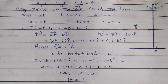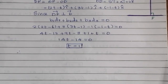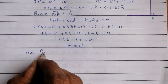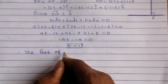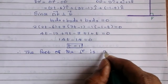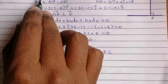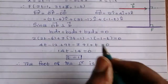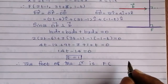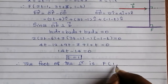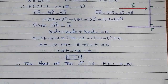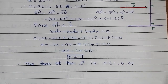Therefore, the foot of the perpendicular is F. Substituting t = 1: x = 2(1)−1 = 1, y = 3(1)+3 = 6, z = 1−1 = 0. So the foot of the perpendicular is (1, 6, 0).